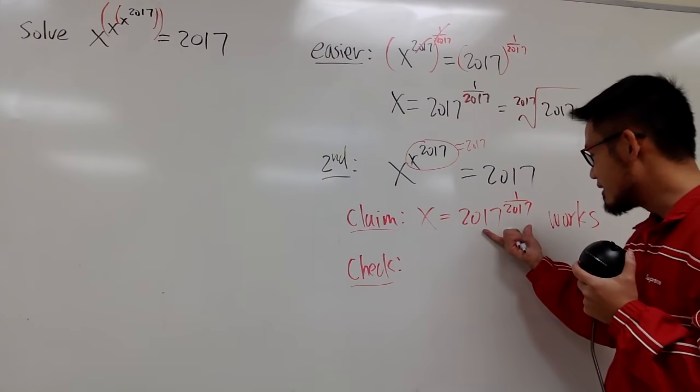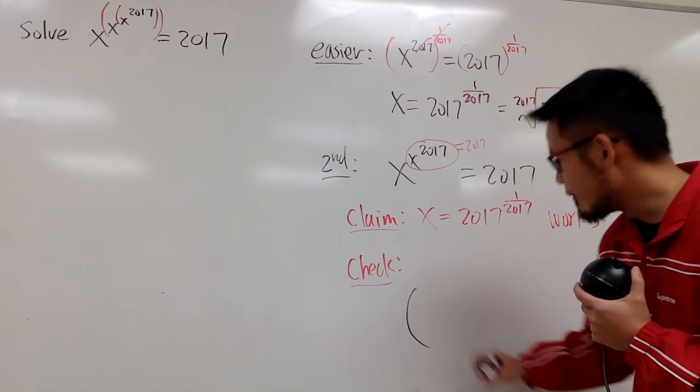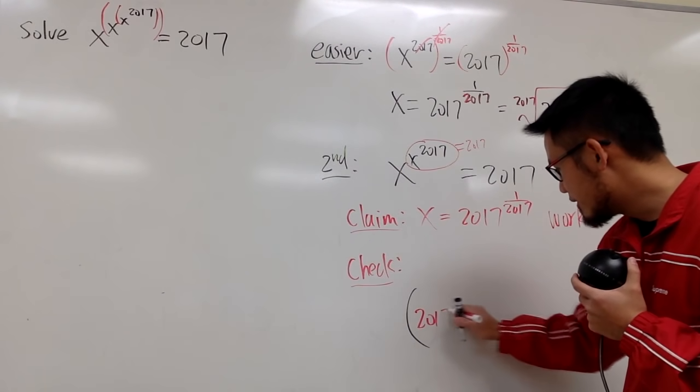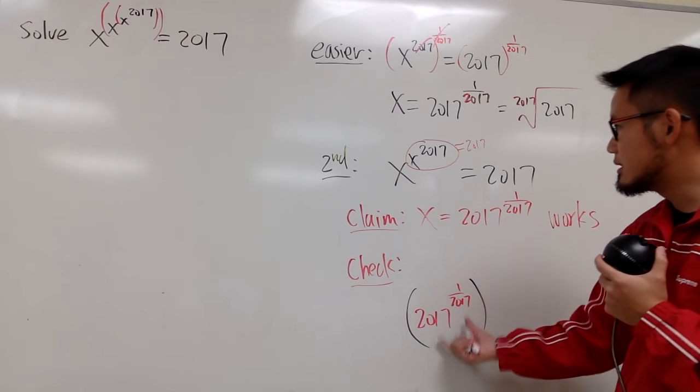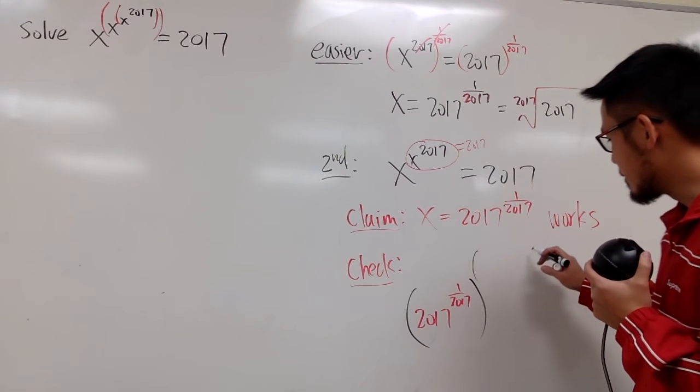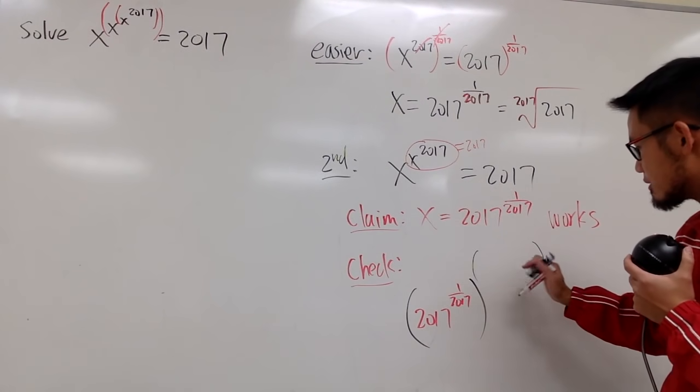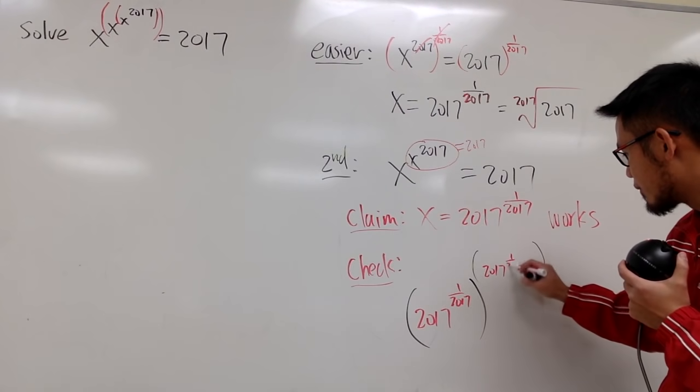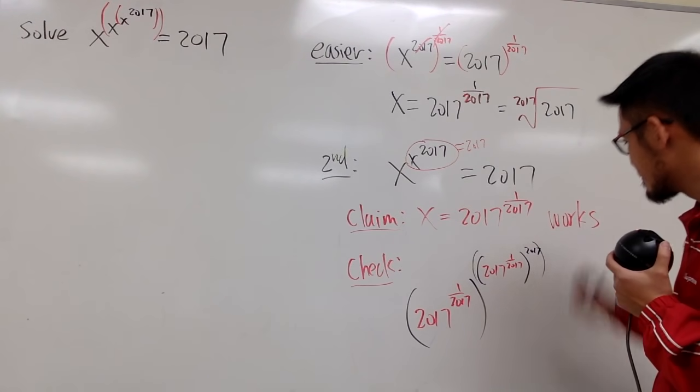So I'm just going to plug in this into this x and that x and write this out carefully. So I will write down this right here, 2017 raised to the 1 over 2017, like this. That's this x. And then I will open a bigger parenthesis right here, and I will have to enter this for this x, so I will put this down, 2017 raised to the 1 over 2017, just like this, raised to the 2017 power.